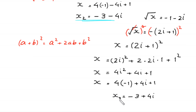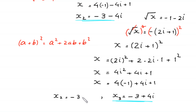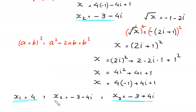So x₁ is equal to 4, x₂ is equal to negative 3 minus 4i, and x₃ is equal to negative 3 plus 4i. These are the three solutions of this equation.